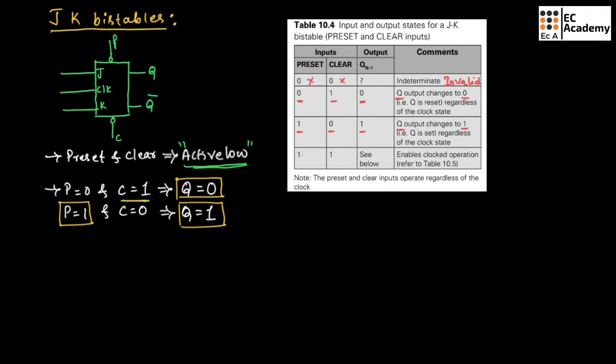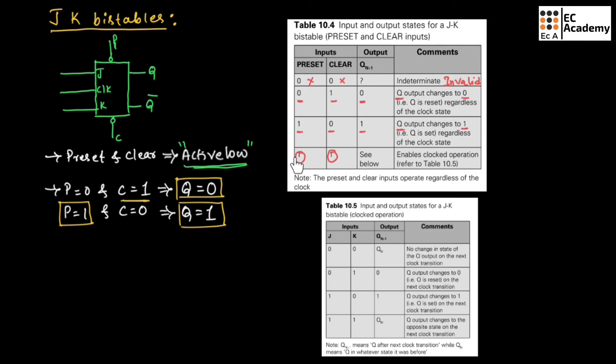Which means Q will be equal to 1. And when preset is 1 and clear is 1, at that case, we can apply input J and K, which can be seen in other table. Once we make preset and clear signal as 1, then we can apply the input J and K, for that we will get various output.